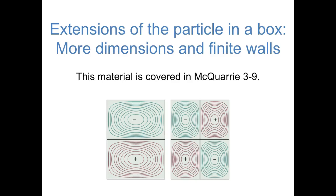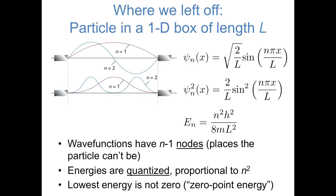Hi, everybody. In the two previous videos, we found the wave functions and quantized energies associated with a particle in a one-dimensional box. In this video, I'd like to extend those concepts both to higher dimensions and cases in which the walls of the box have finite potential energy rather than infinite. We found that the wave functions inside a one-dimensional box are oscillating sine functions, and their energies are quantized and proportional to a quantum number n squared. We also saw that these wave functions have nodes, specific places where the object cannot be located.